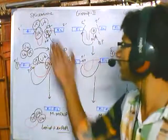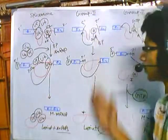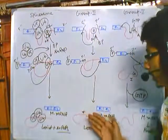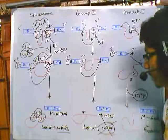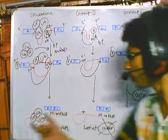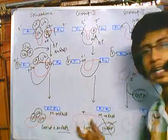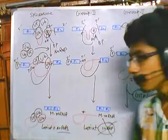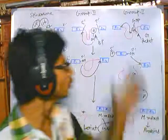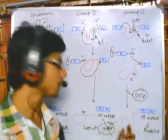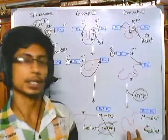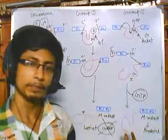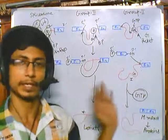Another key difference is in lariat formation. In spliceosome-mediated splicing as well as Group 2 intron splicing, we see the formation of a lariat as a byproduct. But in the case of Group 1 splicing, there is no lariat structure formed. These are the key differences between the three types.